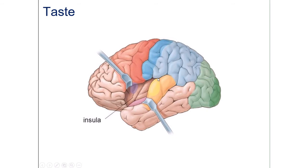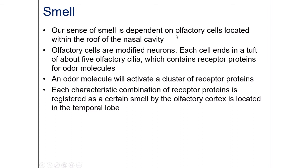Our sense of smell depends on olfactory cells located within the roof of the nasal cavity. These olfactory cells are modified neurons, and each cell ends in a tuft of about five olfactory cilia. Within these cilia you find receptor proteins for odor molecules. We don't have a dedicated receptor for each possible smell — there simply isn't enough space in the nose to pack all those receptors in.